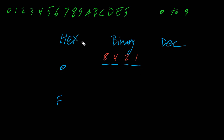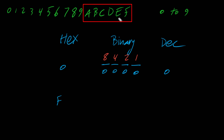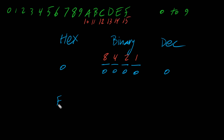So 0 in hexadecimal gives us 4 zeros in binary and 0 in decimal. Now what about F? To keep single digits, hexadecimal uses A through F, where A corresponds to 10, B to 11, C to 12, D to 13, E to 14, and F to 15. Therefore F in hex means 15 in decimal, and in binary all 4 bits are turned on because 8 plus 4 is 12, plus 2 is 14, plus 1 is 15.